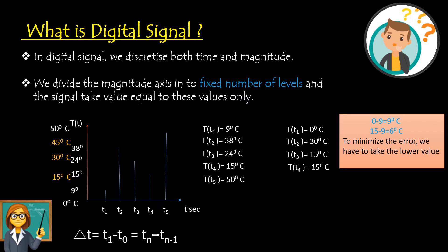For T4, the actual value is 15°C, which is already a permissible level, so the digital signal shows it as-is. At T5 seconds, the temperature is 50°C. However, the maximum permissible value assumed in the digital signal is 45°C — the range is 0 to 45, not 50. So any higher value is rounded off to 45°C, the lowest bounding permissible level.